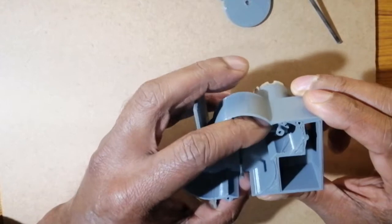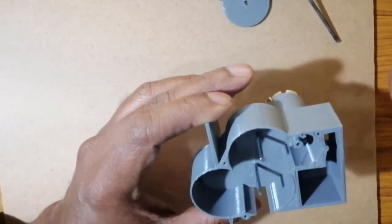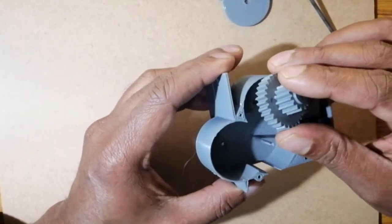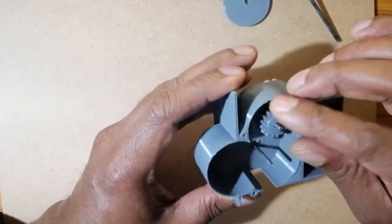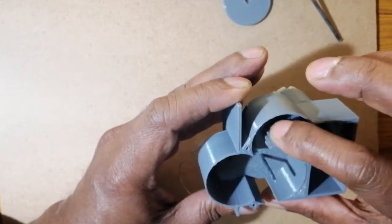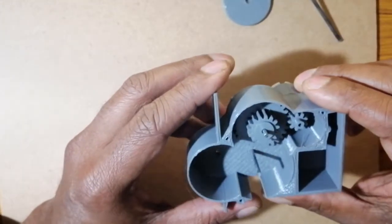Now let's place the other gears. This is the first gear which is coming in contact with the motor. So the first gear is in place.